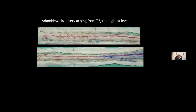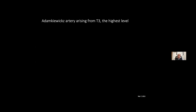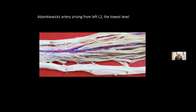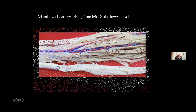This was very interesting. Here we have the cervical segment of the spinal cord, the thoracic segment. Here we have the highest level from the origin of the Adamkiewicz artery — it was arising from T3. Here we have the thoracic and lumbosacral segment. Look at the very long trajectory of this artery. Here we have an anterior aspect of this spinal cord, and here we have the lowest level of this Adamkiewicz artery arising from left L2. This is the dorsal root in L2, and it's giving rise to this Adamkiewicz artery.